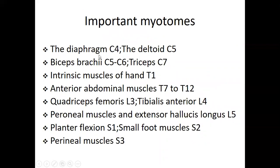Important myotomes to know: diaphragm is C4; deltoid is C5; biceps brachii is C5 to C6; triceps is C7; intrinsic muscles of the hand is T1; anterior abdominal muscles are T7 to T12. Quadriceps femoris is L3; tibialis anterior is L4; peroneal muscles and extensor hallucis longus are L5; plantar flexion is S1; small foot muscles are S2; and peroneal muscles are S3.